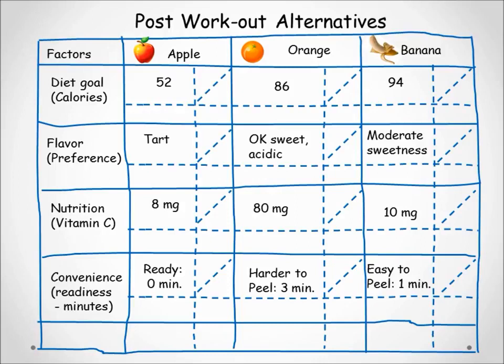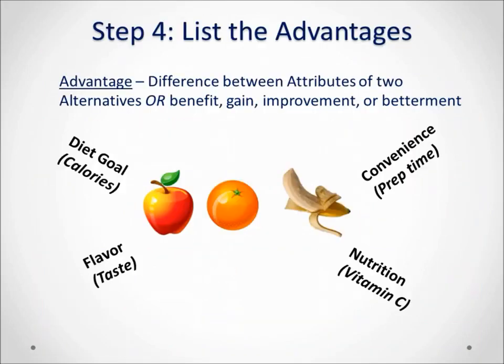For flavor it is more subjective, based on the preference of the stakeholder, so a descriptor is listed on which to differentiate the fruit. After filling in the data, the next step is to underline the least preferred attribute in each factor. For the diet goal, the highest calories is least preferred. We do the same for the rest of the factors. In CBA, an advantage is a beneficial difference between attributes of two alternatives.